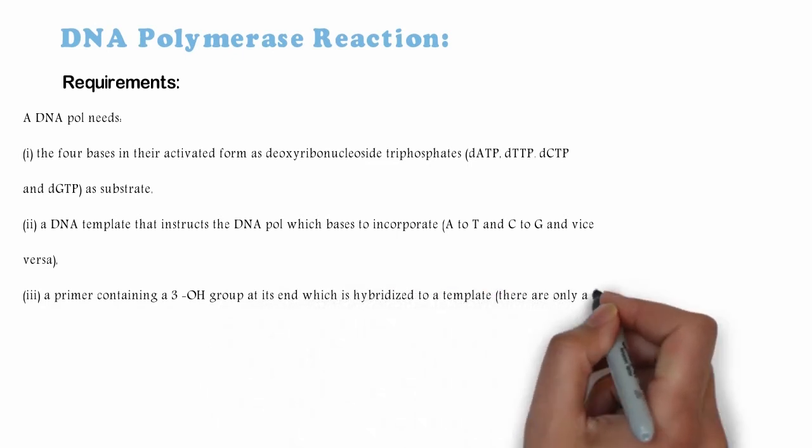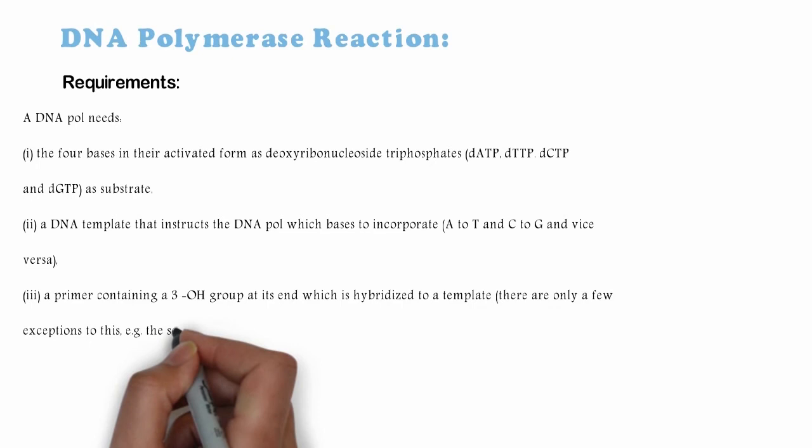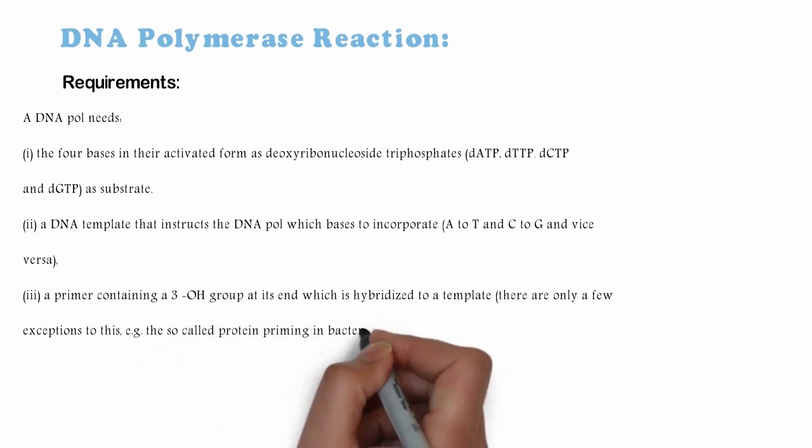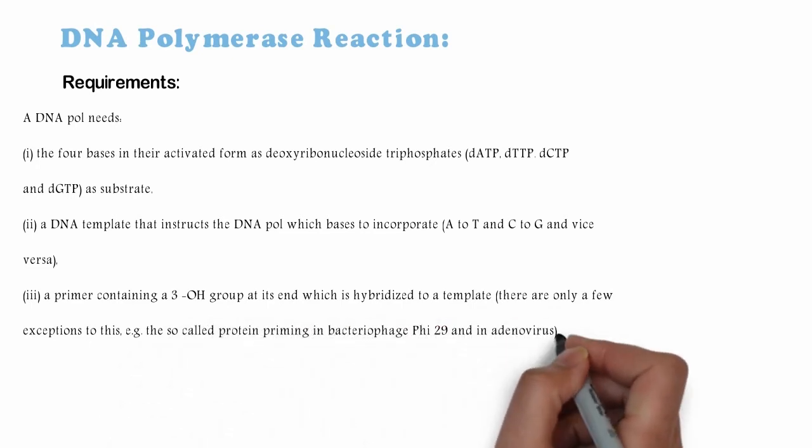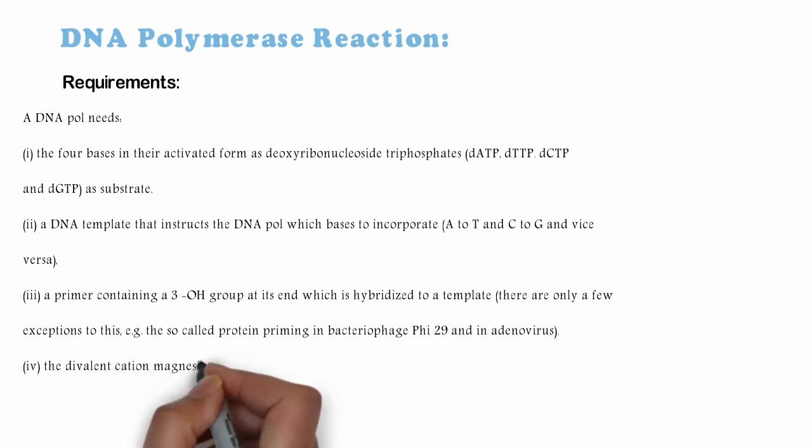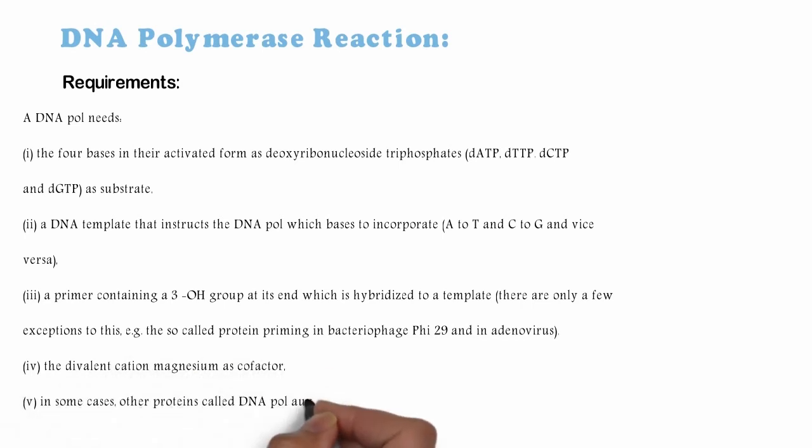(iii) A primer containing a 3'-OH group at its end which is hybridized to a template. There are only a few exceptions to this, e.g., the so-called protein priming in bacteriophage phi29 and in adenovirus. (iv) A divalent cation, magnesium, as cofactor. (v) In some cases, other proteins called DNA polymerase auxiliary proteins.